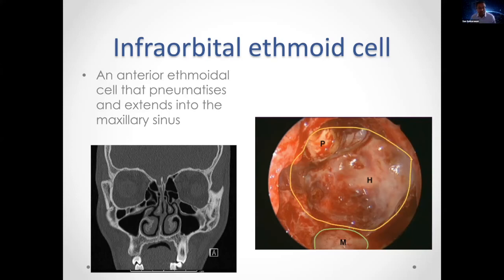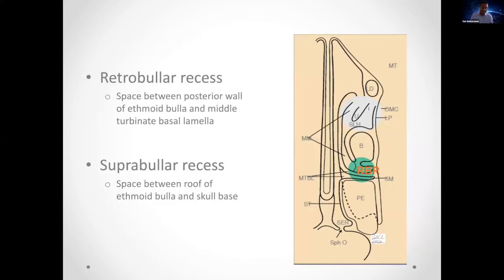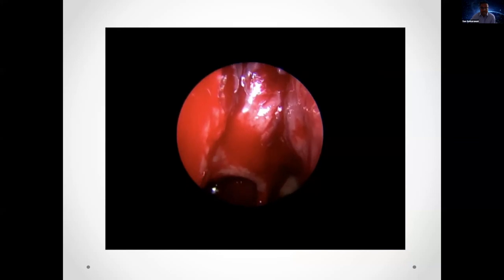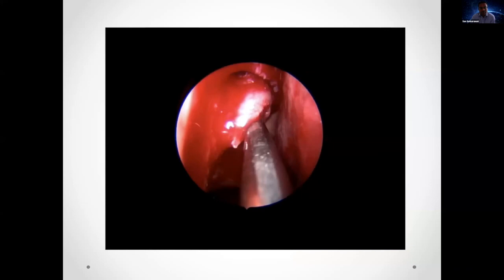The retrobullar recess — formed from the groove of the second ethmoturbinal — is the space directly behind the bulla and in front of the basal lamella of the middle turbinate. It doesn't always exist if the bulla is fused with the basal lamella, but when present it's helpful during surgery for removing the bulla by sliding an instrument in to bring it forward safely. The suprabular recess is the recess above the bulla.